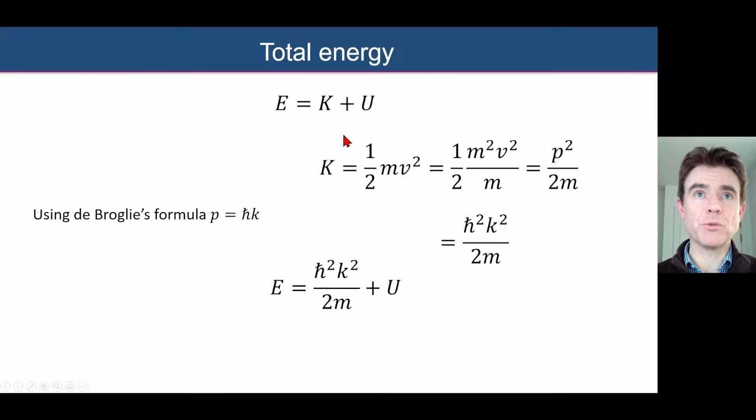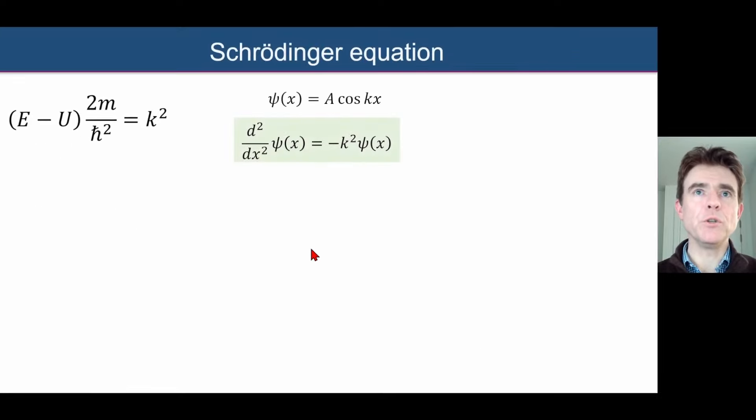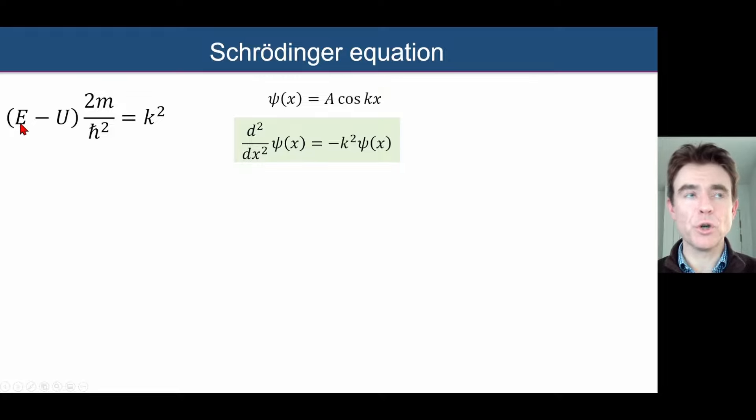Now let's go back to our total energy expression, substitute in for the kinetic energy, and then rearrange that, so E minus U times 2m over h cross squared is equal to k squared. So why have we done that? Well, you might remember just a moment ago, we looked at the wave function, we took its second derivative, and what was the constant here, the proportionality factor? It was minus k squared. And we've just got this beautiful expression for k squared in terms of the particle's total energy and its potential energy.